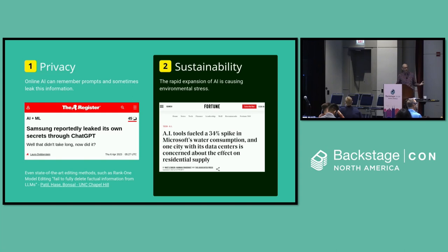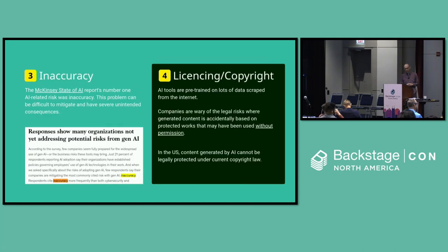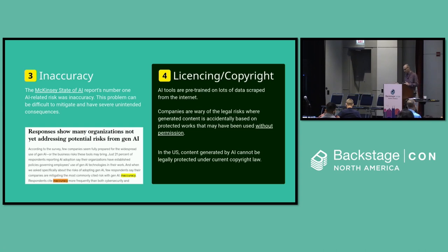It can reuse those prompts in its memory and start to share those more widely. Samsung were embarrassed by that and immediately stopped using ChatGPT internally. Sustainability is a problem — data centers all over the world are racking lots of NVIDIA graphics cards, and finding the power and cooling to run them is causing sustainability issues. There was a 34% spike in water consumption from a Microsoft data center, all down to the use of generative AI. And of course there's inaccuracy — McKinsey's state of AI report found that the number one concern reported back was inaccuracy. AI can hallucinate, and knowing when it's hallucinating is a challenge.